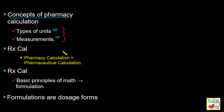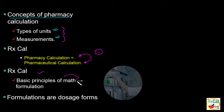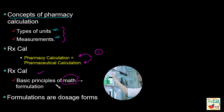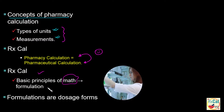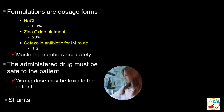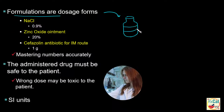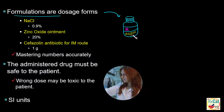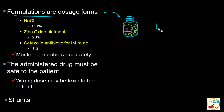Throughout this course, we will use the terms pharmacy calculation and pharmaceutical calculation interchangeably. Pharmaceutical calculation is an integral part of pharmaceutical science, where we apply the basic principles of mathematics into preparation and administration of various formulations. Formulations are the dosage forms we compound or that are supplied by manufacturers.